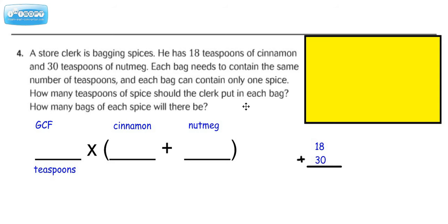Alright, so the first thing we should probably think about is let's add these two numbers together because that's going to get us the total number of teaspoons. If we add 18 and 30, just to have that number tucked away, 8 plus 0 is 8 and 1 plus 3 is 4. So we're dealing with 48 teaspoons of various spices.